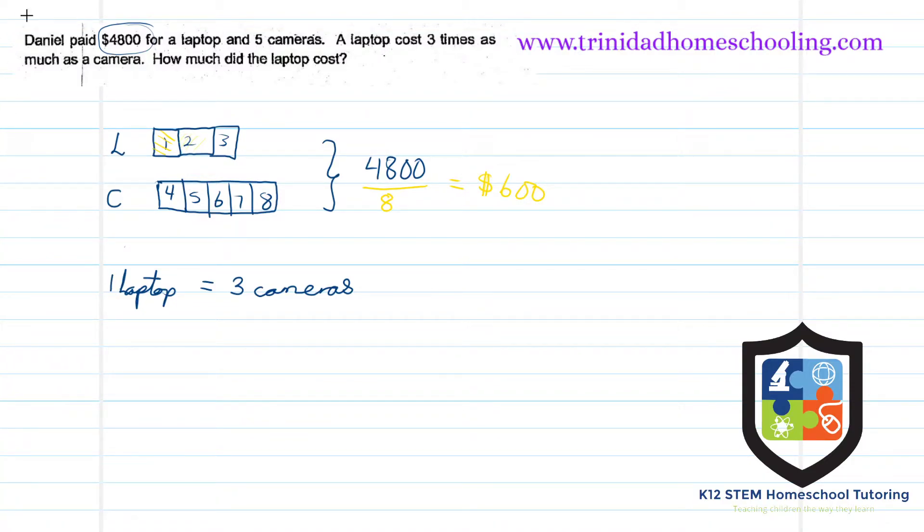Therefore, if one camera is six hundred dollars, then one laptop, or three cameras, is equal to three by six hundred which is equal to one thousand eight hundred, and that is the cost of one laptop.